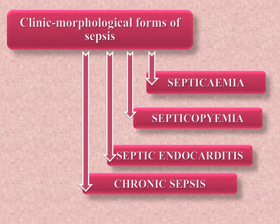Clinical morphological forms of sepsis are: septicemia, septicopiemia, pyemia, septic endocarditis, and chronic sepsis.